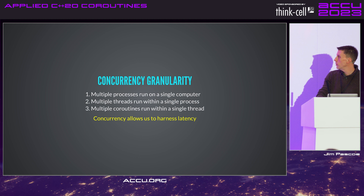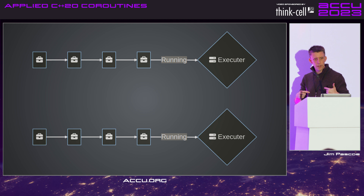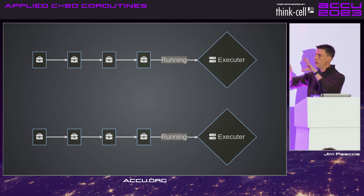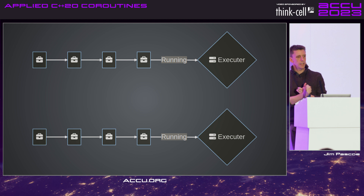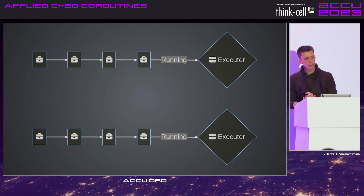There's a granularity to this model: multiple processes running on a single computer, multiple threads running within a single process, and — this is the useful part — multiple coroutines running within a single thread. If an individual coroutine is blocked, another coroutine in the same thread can execute. If all coroutines in a thread are blocked, another thread in the same process can execute. If all threads in a process are blocked, the OS can swap in another process.